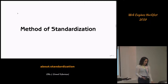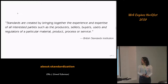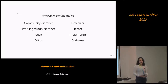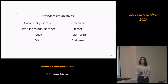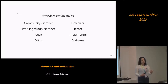To do standardization, you bring together the experience and expertise of all interested parties — producers, sellers, buyers, users, and regulators of a particular material, product, process, or service. In web-related areas, there's often a working group — at W3C, a working group is a kind of committee of people who make decisions about a standard. But there's also a wider community who participate because it's an open process and public participation is allowed — people not in the committee who give input, express opinions, send issues, or submit suggestions.